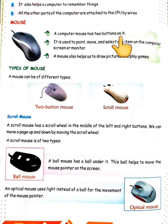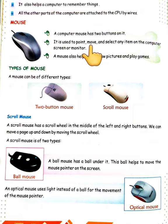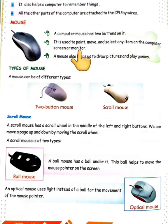How many buttons does the computer mouse have? Two buttons. The mouse is used to point, move, and select any item on the computer screen or monitor.